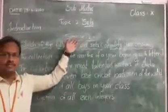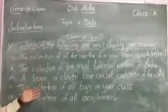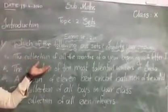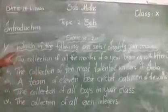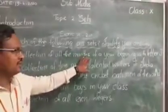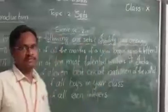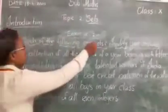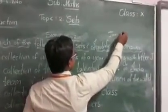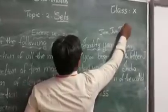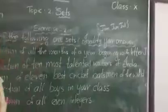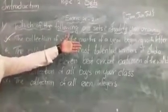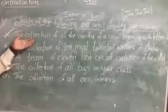Let us start Exercise 2.1, which gives us an idea about when we call a collection a set and when we do not. First: the collection of all months of a year beginning with the letter J. The months beginning with J are January, June, July — three months with beginning letter J. This is a well-defined collection, so it is a set.